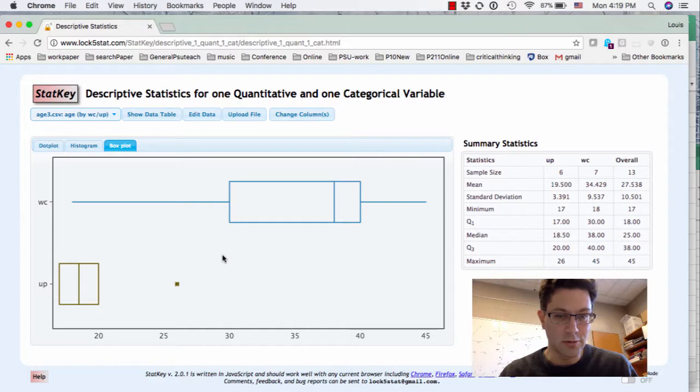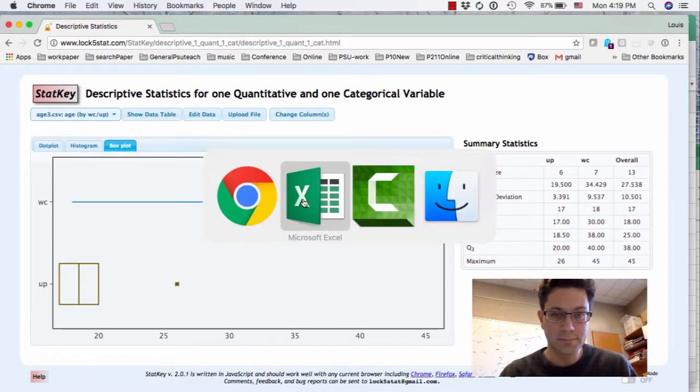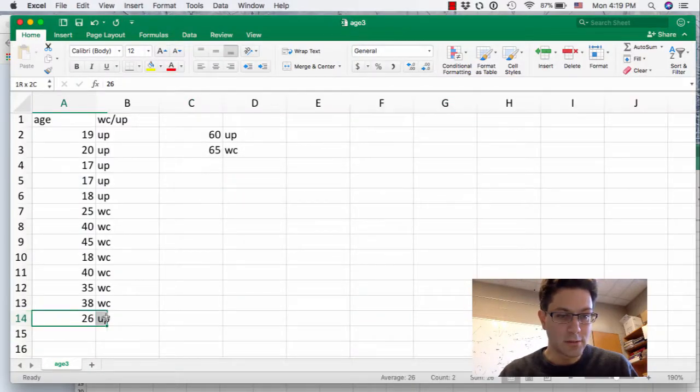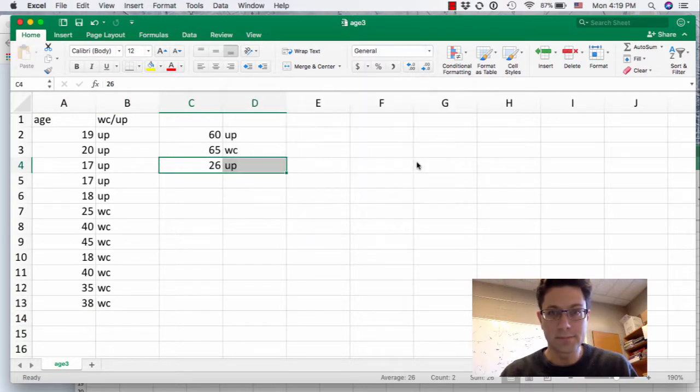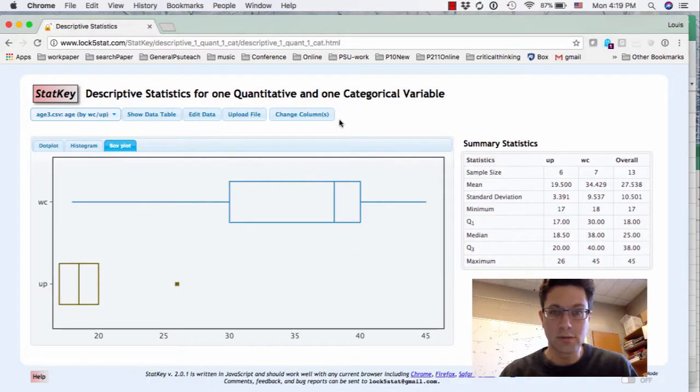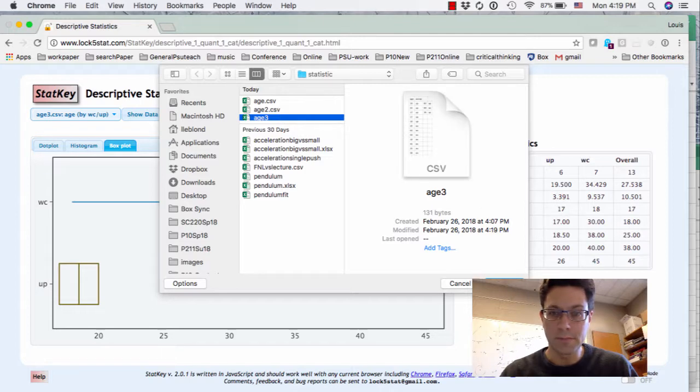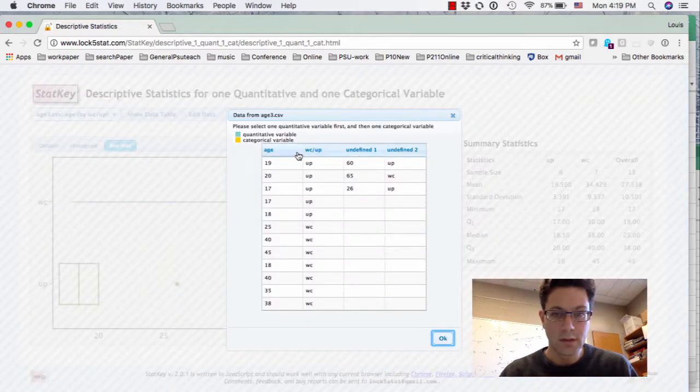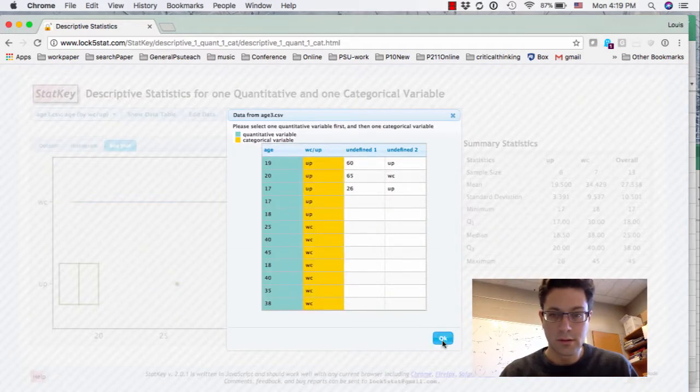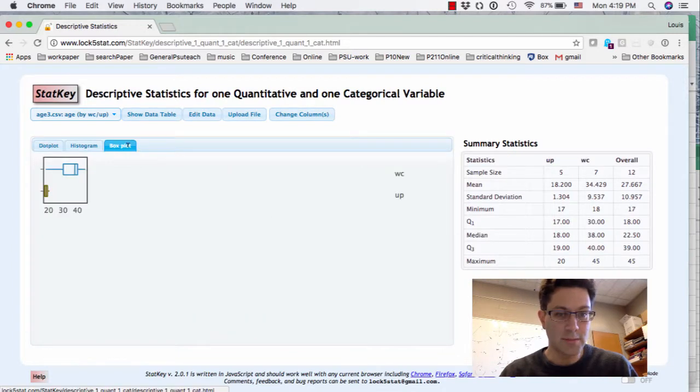Let's get rid of that one too. I can go back here, take this one, which is 26, outlier, save, go back to this one, re-upload the data, put out the outlier, open, go to boxplot.